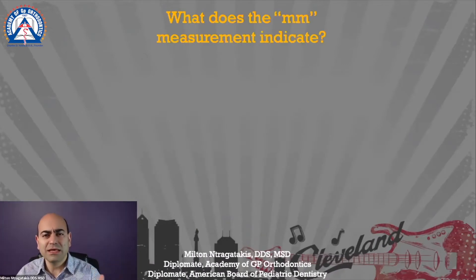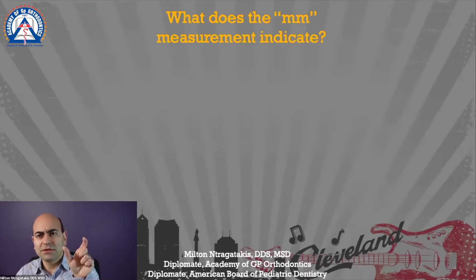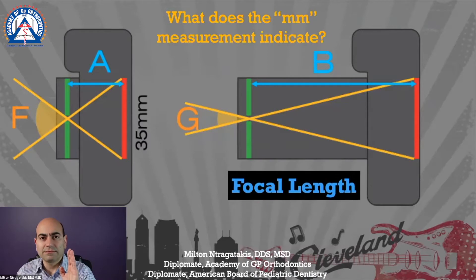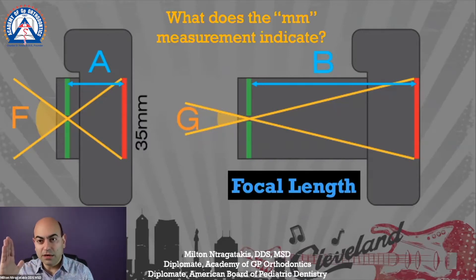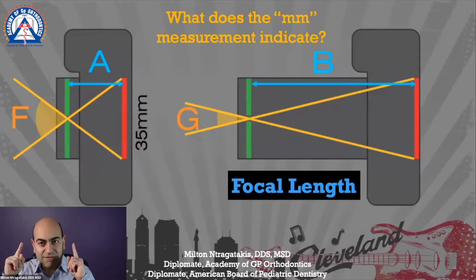What does the millimeter measurement indicate? Think about it — a zoom lens of 100 millimeters, you can get really close. What is 100 millimeters? It's 10 centimeters — it's this much. So what does it measure? You have to understand it measures the focal length: the distance from the sensor to the convergence of light. The bigger your lens, the greater the focal length.